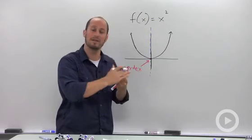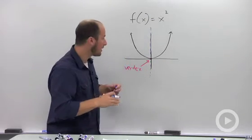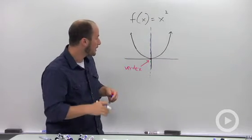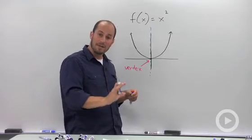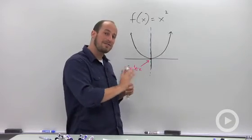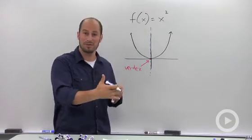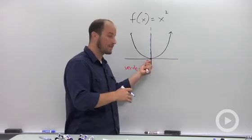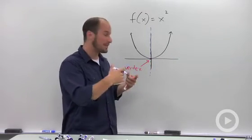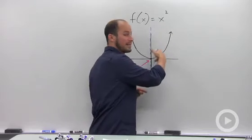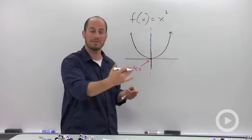So if you folded it over, it would actually be symmetric about that line. Depending on your teacher, you're going to have to do various levels of precision. Some teachers just want to see a vertex and the general shape. Other teachers want to see specific points — sometimes three, sometimes five.